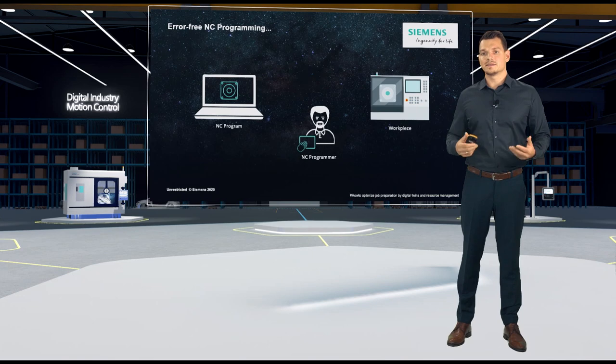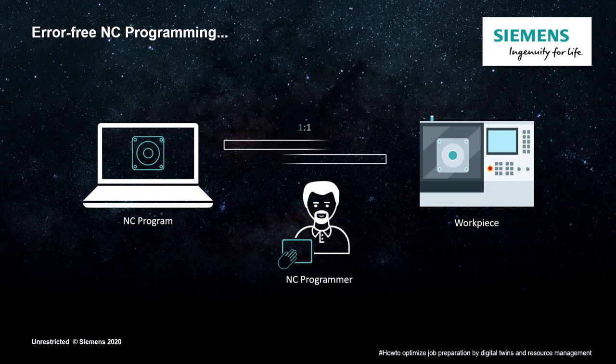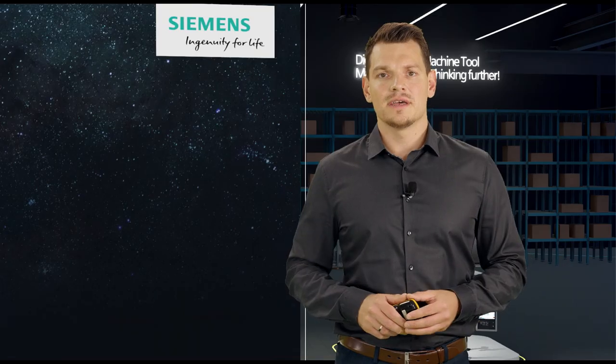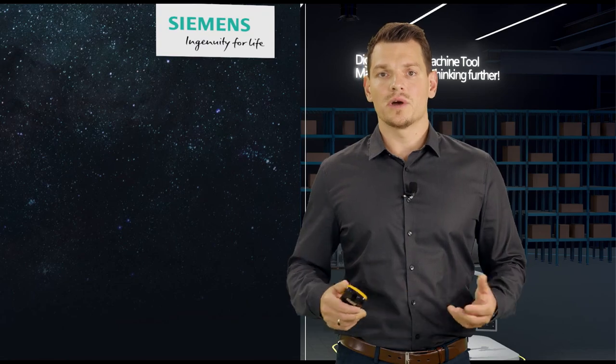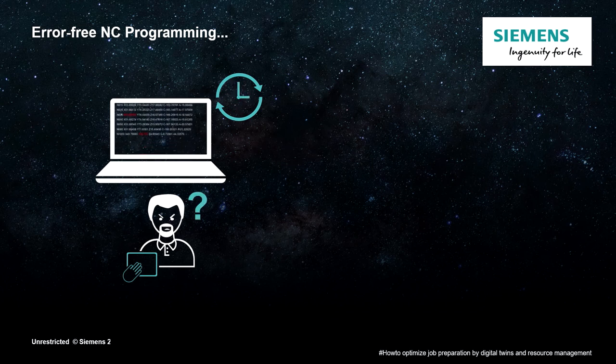Let's take a look at the NC programmer first. He creates an NC program for the corresponding machine. The question is, how does he know that the created and optimized part program will later run on the machine without any problems? Let's first take a closer look at his work. He has to write the program and make optimizations. He still doesn't know whether the NC program runs properly.